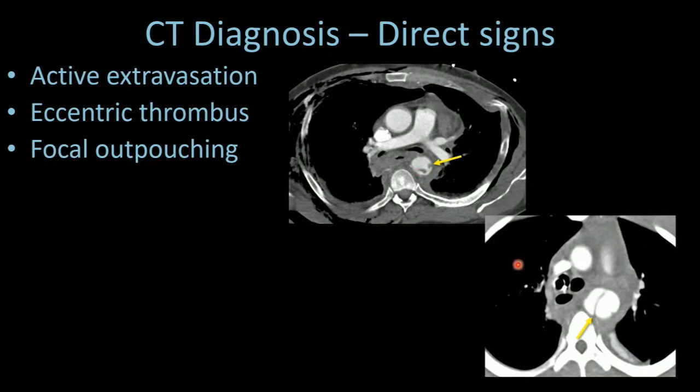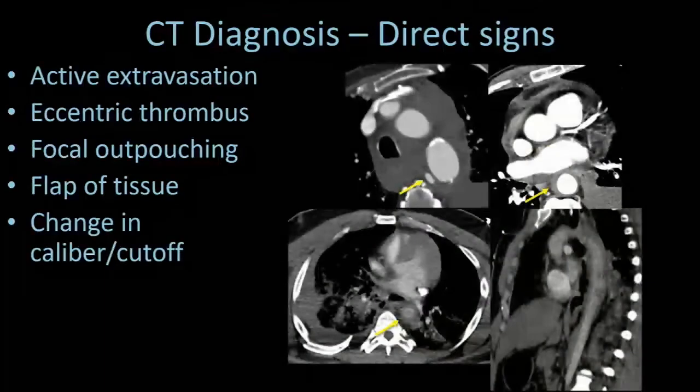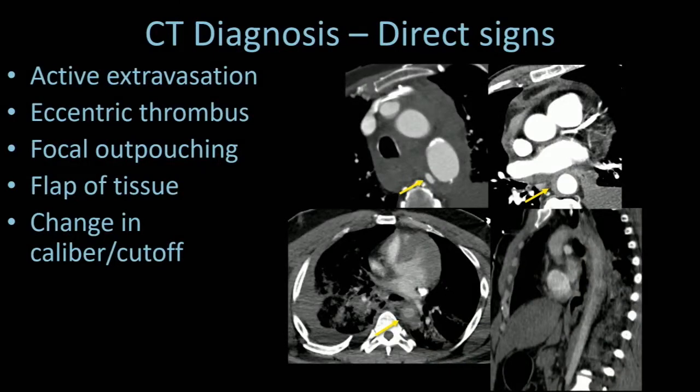Occasionally, you'll see flaps of tissue within the aorta. Those may be parts of focal outpouchings or transections or represent intimal flaps raised in a short area. Caliber changes can occasionally be seen, another important finding.